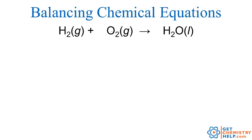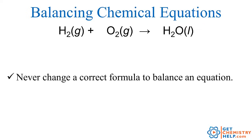Then we have two oxygen atoms go in, but only one oxygen atom comes out. So the first thing to keep in mind is you cannot change a correct formula. So this is the formula for water. The wrong way to balance this would be to try to change the subscripts and say, oh, well I need two oxygens, I'll just turn this into H2O2. You can't do that because that's not water anymore. So first of all, keep in mind, don't change the subscripts. You never want to do that. Because if the formula is already correct, you have to leave it correct.